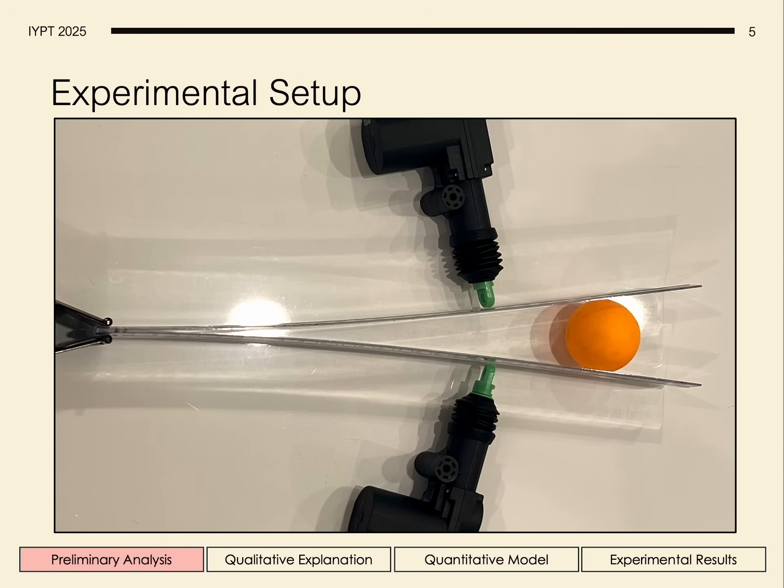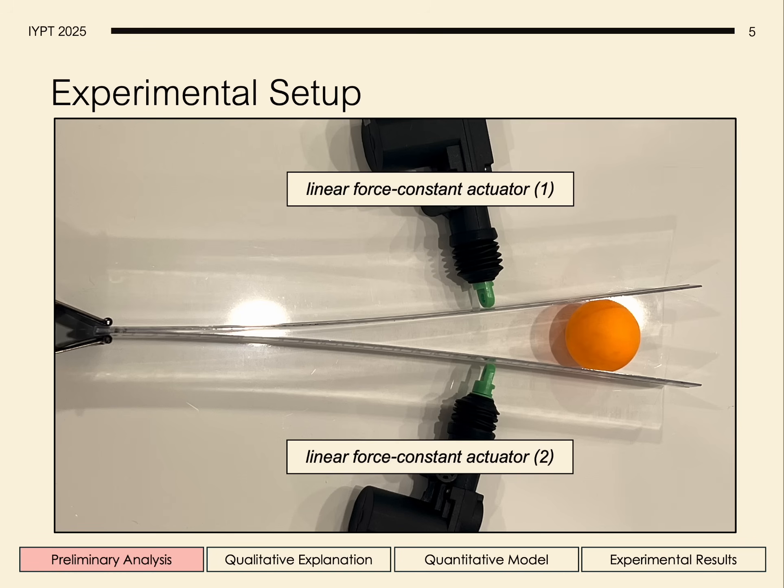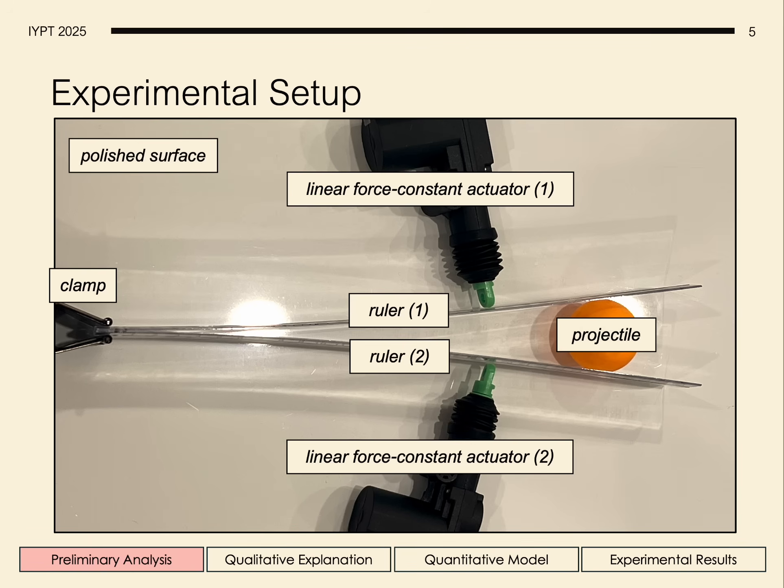What we did for our experimental setup is we used linear force constant actuators to control the force, a clamp to hold down the rulers, the rulers themselves, the projectile placed between them, which is all placed on a polished surface to reduce friction on the ball.